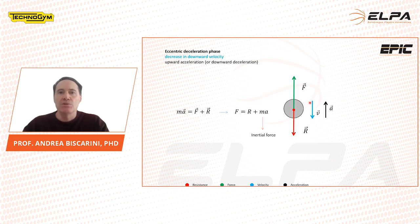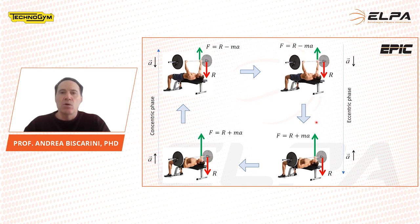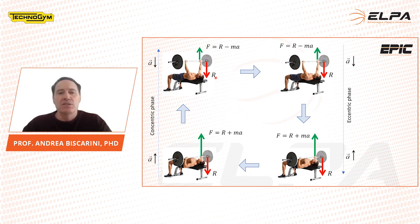In the final descending phase of the lift, the downward velocity should decrease to zero with an upward deceleration. To do this, we have to apply a vertical upward-directed force greater than the resistance and equal to the sum of the resistance and the inertial force needed to produce the deceleration. This is the eccentric deceleration phase of the lift. And this is a diagram that highlights all the inertial effects. In the transition between the eccentric and the concentric phase, and between the concentric and the eccentric phase, the applied force is higher than the resistance — this is needed to produce the necessary accelerations and decelerations.